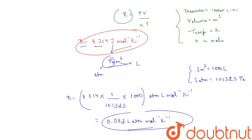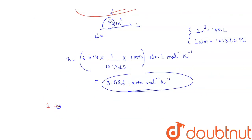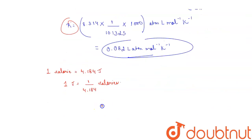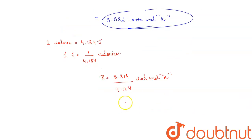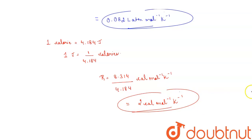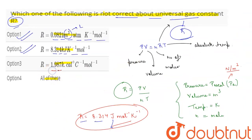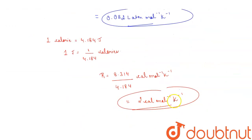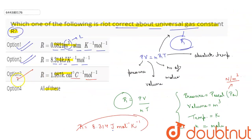One calorie equals 4.184 joules, so one joule equals 1/4.184 calories. The value of R in calories is 8.314 divided by 4.184, giving approximately 2 calorie mole inverse kelvin inverse. Option 3 gives 1.987 kilocalorie degree Celsius inverse mole inverse — but it should be 2 calorie mole inverse kelvin inverse, so option 3 is also incorrect.